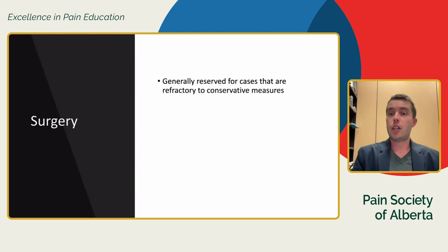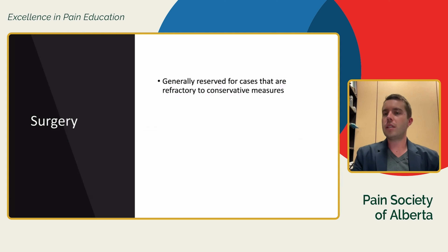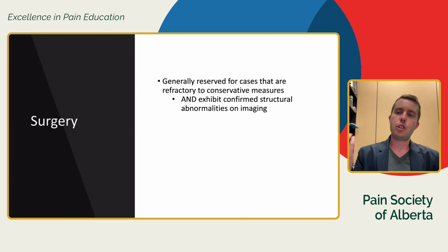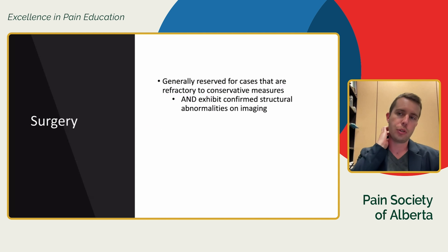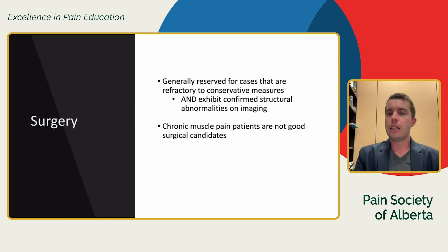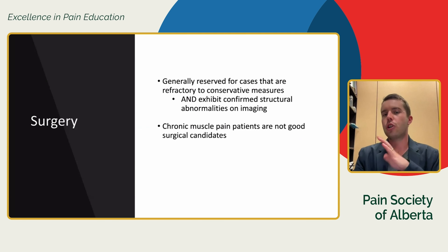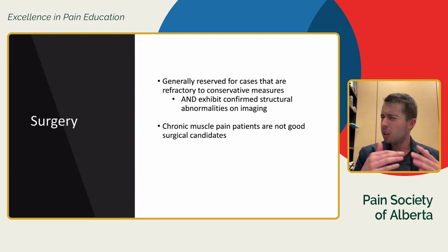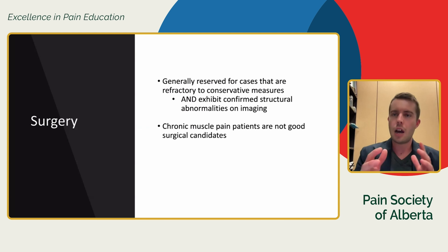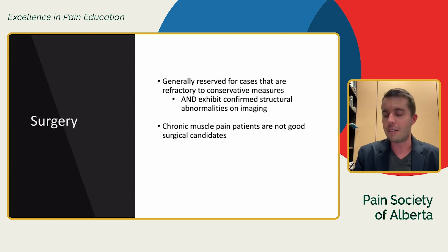Surgery is only used in refractory cases — when everything else hasn't helped and there's something structurally wrong in the joint. Coordination with oral surgery colleagues would be required. For patients with chronic muscle pain but healthy joints, surgery is never an answer. You don't want to proceed with surgery if it's not clearly indicated.